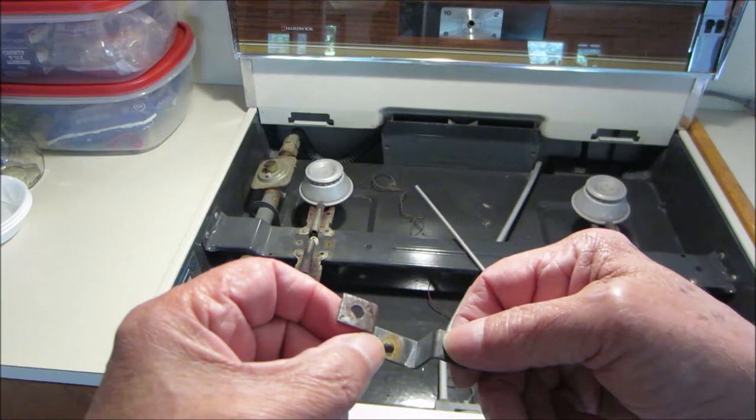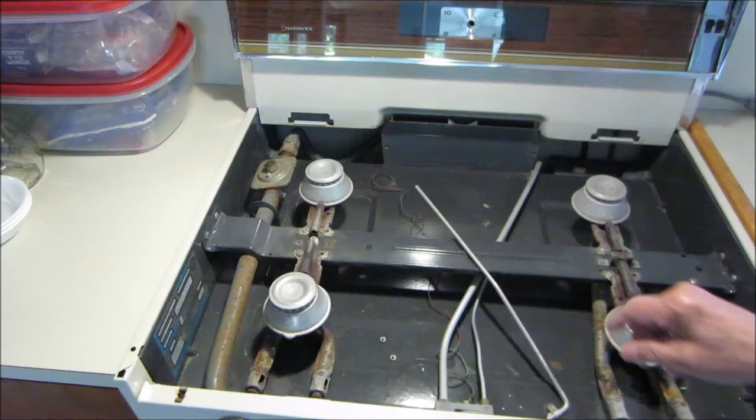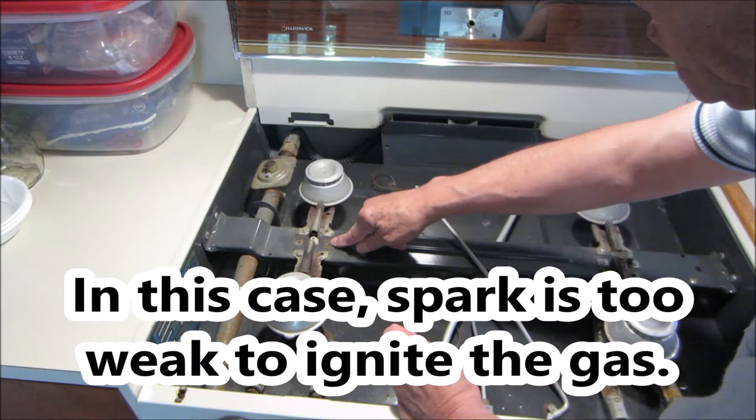Now the spark jumps to this bracket and goes to ground through the stove. So if you've got any kind of high resistance anywhere on this bracket or anywhere on the stove top, it doesn't spark. So we're going to clean the rust off of here, we're going to clean the rust off of here.